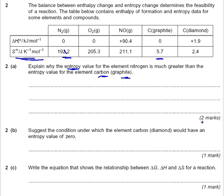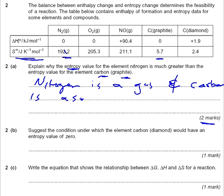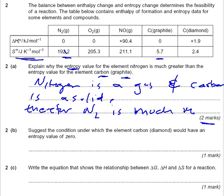It's a two-mark question. The first mark is that nitrogen is a gas, and carbon is a solid. Your second mark is to justify your reasoning — to explain why this affects entropy. Because nitrogen is a gas, nitrogen is therefore much more disordered.